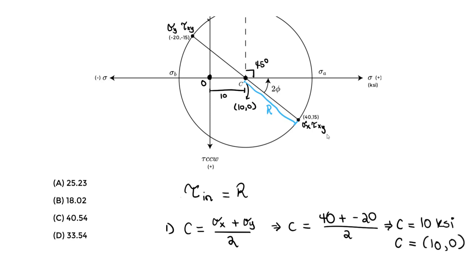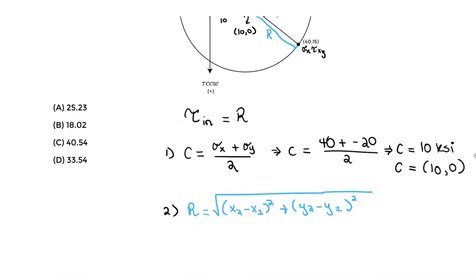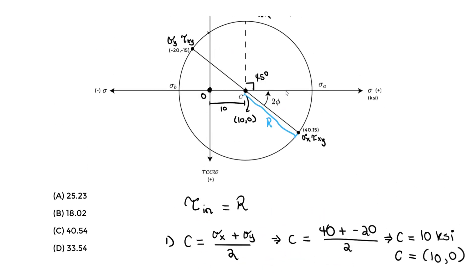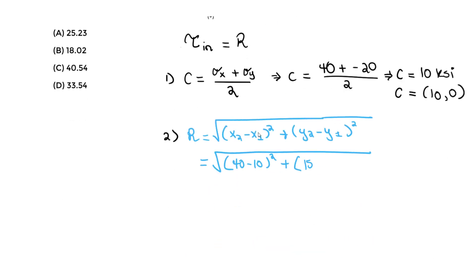Taking the change in x coordinates: x final minus x initial = 40 minus 10. The change in y: y final minus y initial = 15 minus 0. So r equals the square root of (40 minus 10) squared plus (15 minus 0) squared. Solving, we get 33.54 KSI. This is our answer — the maximum in-plane shear stress is 33.54 KSI, which is answer D.